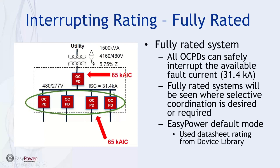Not to confuse coordination with series rating — it is basically important that all the equipment in your one-line can withstand the worst-case fault at any particular bus. From a manufacturer's data sheet, a device has a rating and its capability to operate within a range of fault current. In an application where all devices are rated for 65,000 amps and the worst-case current on a bus is 31,400 amps, all are compliant — a fully rated situation.